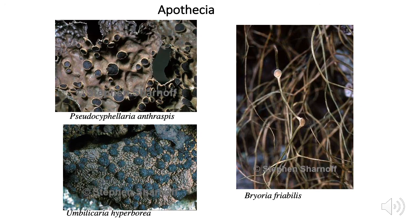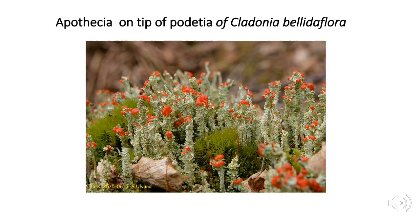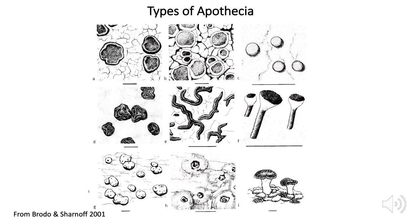Here are a few more examples of what apothecia can look like — look for the round things in all these pictures. In one example, you'll see apothecia as little red things on the ends of podetia structures we talked about in part one — little stalks. Here are drawings of all the different shapes apothecia can take. Most of them are round, but not all — those squiggly ones in the middle are a notable exception. You see these in script lichens, which are given that name because those oddly shaped squiggly apothecia look almost like letters.